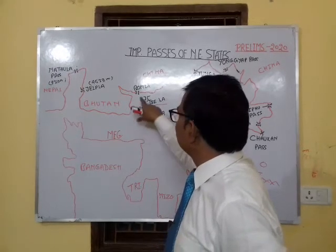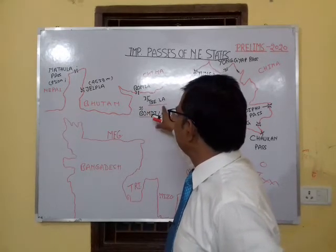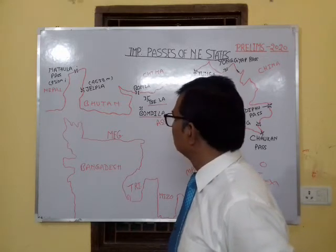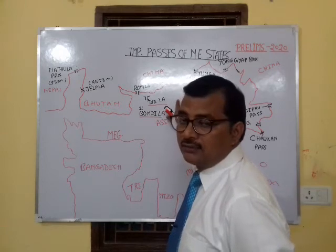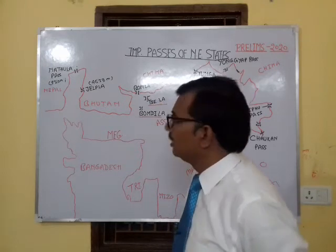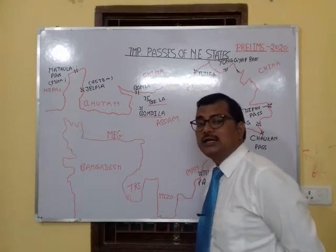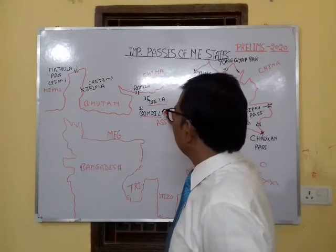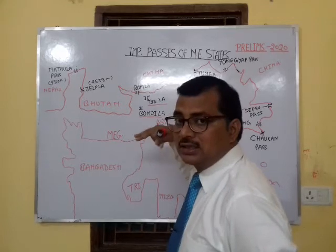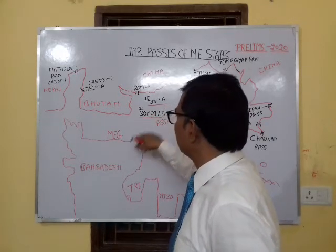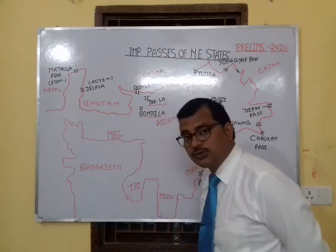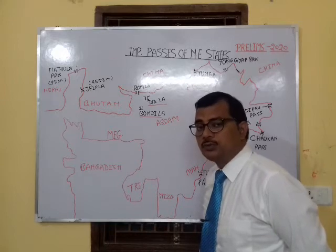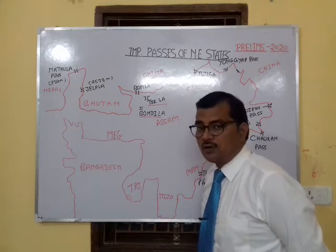After that, there are other passes: Bomdi La, Se La, and Bomdila. These three passes are found in Arunachal Pradesh. Bomdi La is situated on the northern side in the Greater Himalaya region and connects India to China. Se La is situated in the inner side of Arunachal Pradesh. Bomdila is one of the most important because it connects Tawang Valley to China. Tawang Valley is a very important place — it is a holy place of Buddhism and Tawang Temple is situated there.